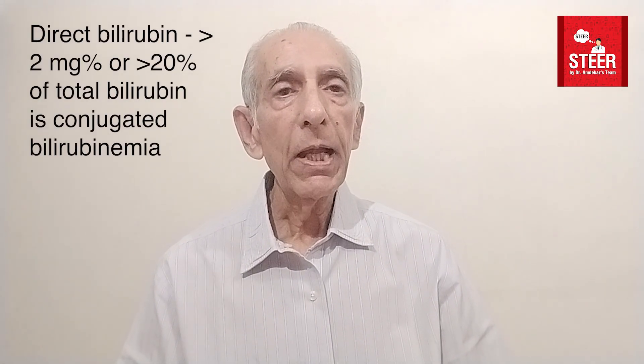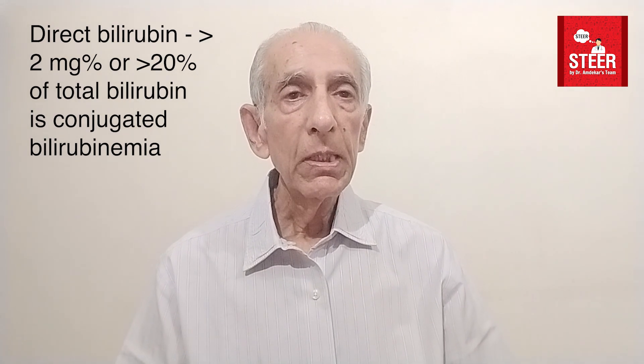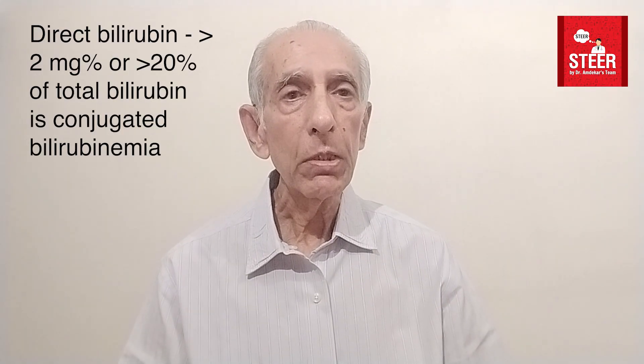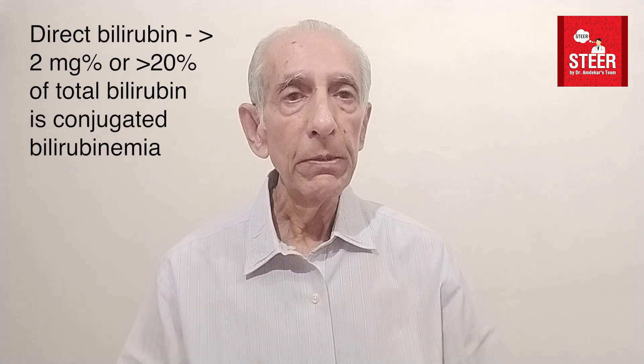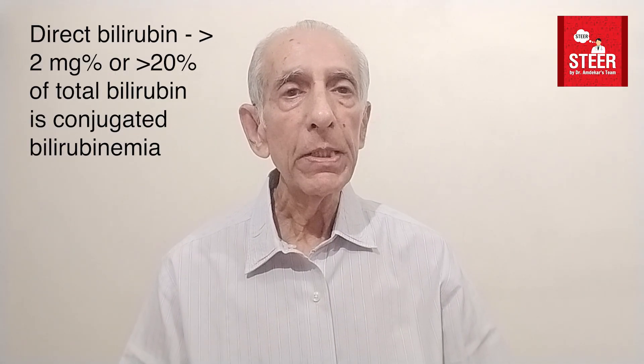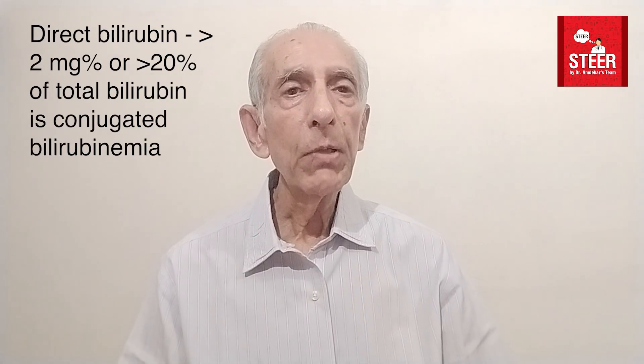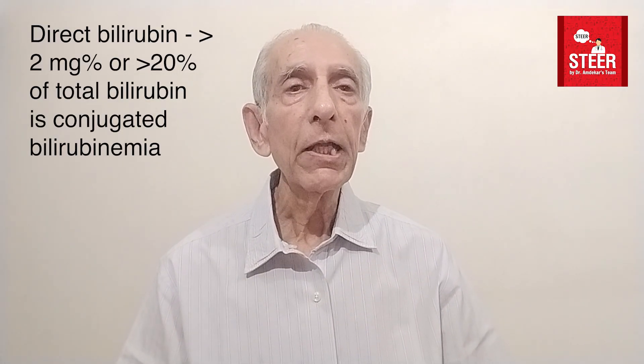Having said this, let's see how to interpret these liver function tests. The most common of course is bilirubin — direct and indirect. Please make a note that when the rise in bilirubin is very minimal, if the direct fraction is more than 20% of the total, then it is called a direct bilirubinemia. Whereas in other situations when the total bilirubin is reasonably higher, any direct bilirubin more than 2 milligram percent would be called a direct bilirubinemia.